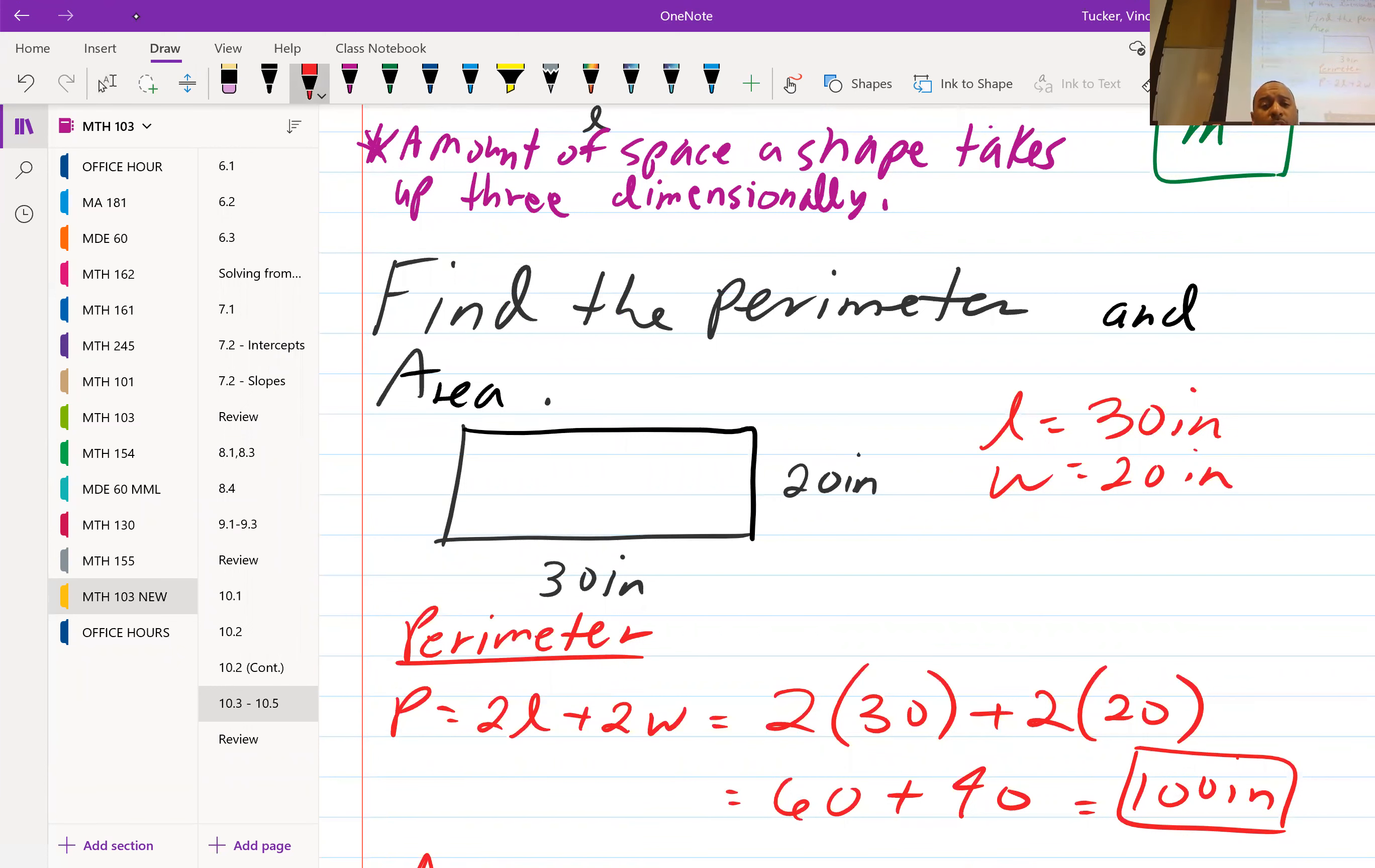It doesn't matter which one you find first, whether it be the perimeter or the area. So went ahead and used the rectangle formula for the perimeter. Once again, when it comes to perimeter, if you want to use the formula, that's fine. If not, just add up your sides. And so 2L plus 2W, that's 2 times 30, plus 2 times 20, all we're doing is plugging in for L and W length and width. That'll be 60 plus 40, which is 100 inches.